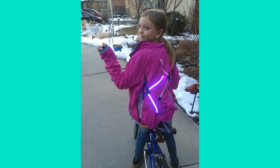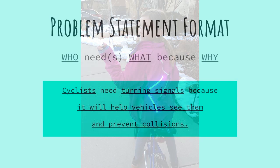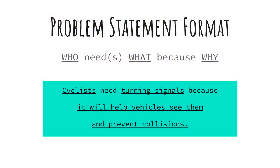This student constructed a jacket with turn signals. Her problem statement could be: cyclists need turning signals because it will help vehicles see them and prevent collisions. Regardless of if they are writing a problem statement or question, students should follow these five guidelines.